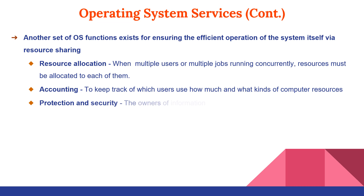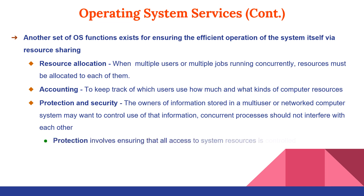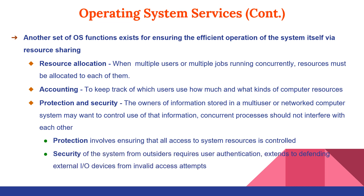Protection and security: the owner of information stored in a multi-user or networked computer system may want to control use of that information, and concurrent processes should not interfere with each other. Protection involves ensuring that all access to system resources is controlled. Security of the system from outsiders requires user authentication and extends to defending against invalid access attempts from external I/O devices. If a system is to be protected and secure, precautions must be instituted throughout — a chain is only as strong as its weakest link.